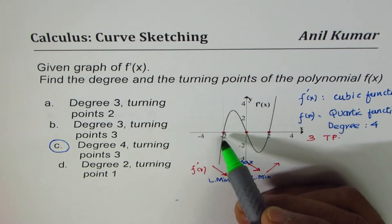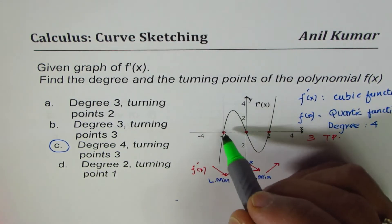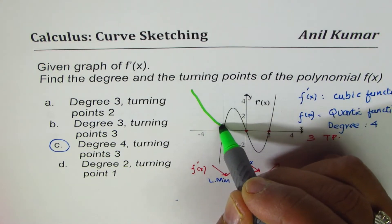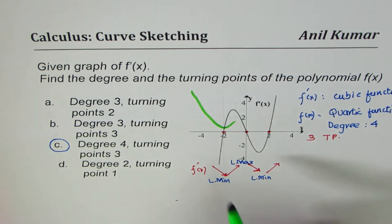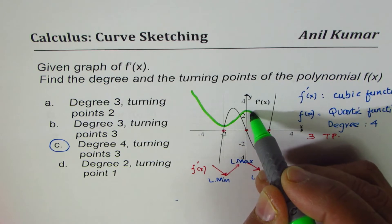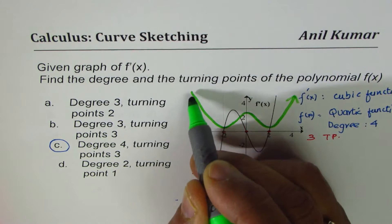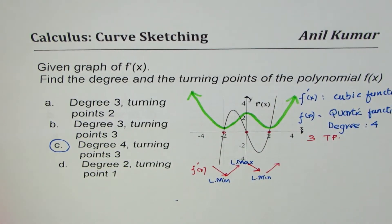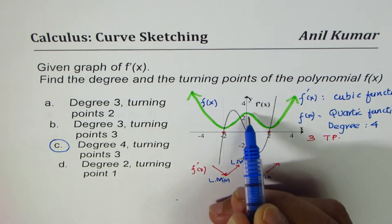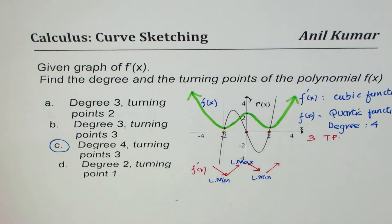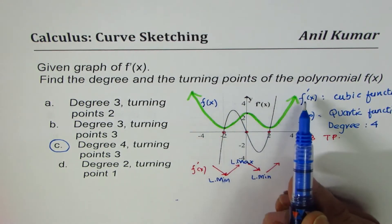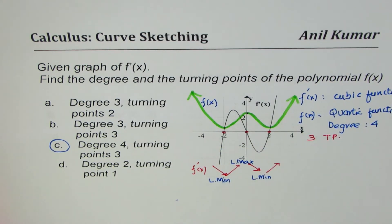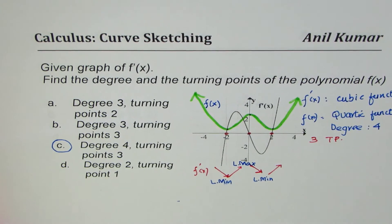Negative shows the function is decreasing over that interval, so we have a local minimum. Then it rises to a local maximum, and then down to another local minimum. That gives us one of these quartic functions. We have one, two, three turning points — which correspond to the three zeros in the derivative. Whenever you have a function, the zeros of the first derivative may give rise to local maximum or minimum.